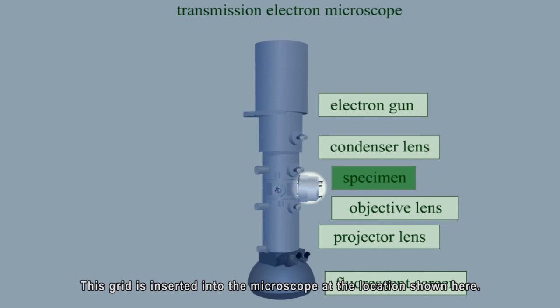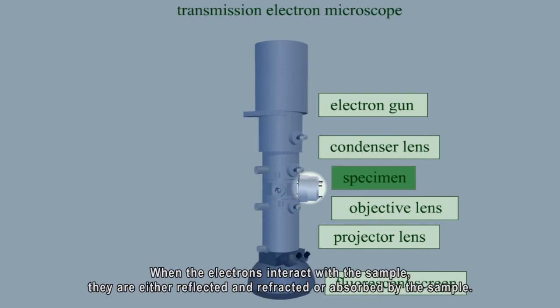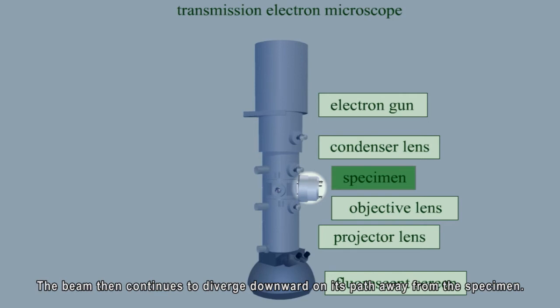This grid is inserted into the microscope at the location shown here. When the electrons interact with the sample, they are either reflected and refracted or absorbed by the sample. The beam then continues to diverge downward on its path away from the specimen.